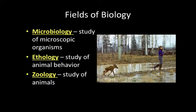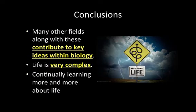So there's a wide variety of different fields of biology that you can study, but the key thing to remember is that all of these contribute to the field of biology — they all give really important information as to how biology works. In conclusion, there are many other fields along with these; these are not the only ones. They all contribute to key ideas within biology, so when you talk about mitosis, meiosis, Punnett squares, ecology, or cell biology, they're all based in these different sciences and contribute to the general field of biology.